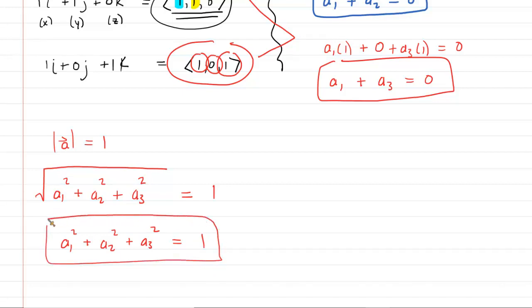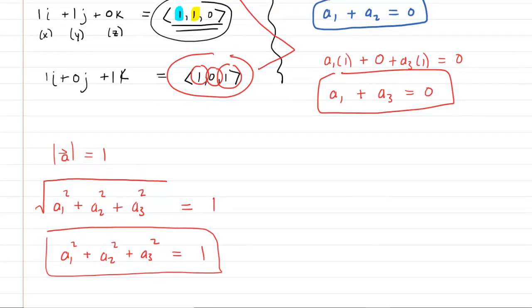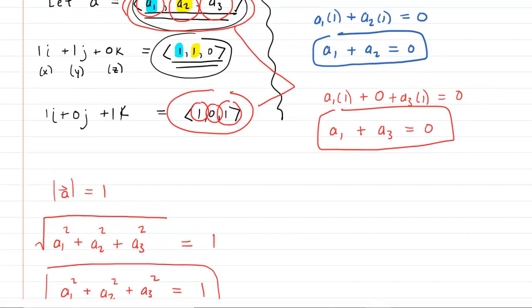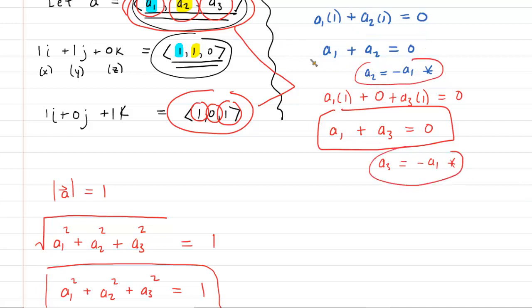The rest of the problem becomes basically an algebra problem. And so for us to proceed, we might want to go back to the equation that we put into this blue box. Notice in that case, if we subtracted A1 from both sides, we could say that A2 is equal to negative A1. And then similarly, in this other equation, if we subtracted A1 from both sides, we would have A3 is equal to negative A1. So we're going to actually use those two equations and we're going to substitute them into our third equation that we developed down below.